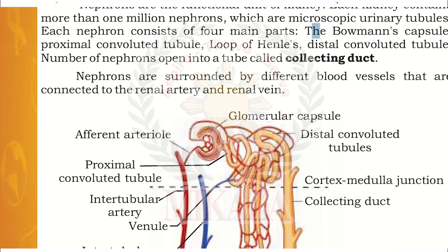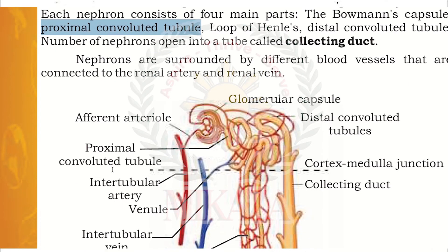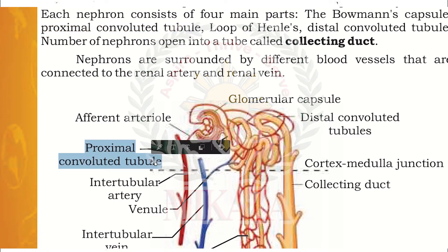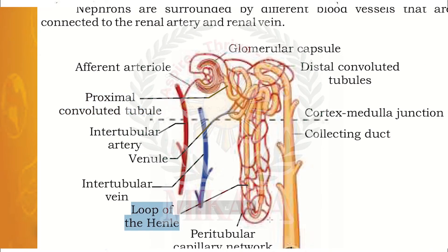The Bowman's capsule is a glomerular layer also called the Bowman's capsule or glomerular capsule. Then comes the proximal convoluted tubules. The loop of Henle is where the most important filtration occurs. Together the Bowman's capsule and glomerulus form what is known as the renal corpuscle or Malpighian body.